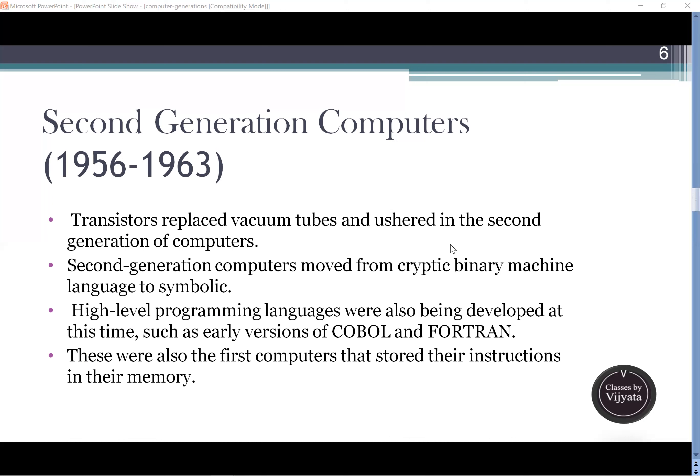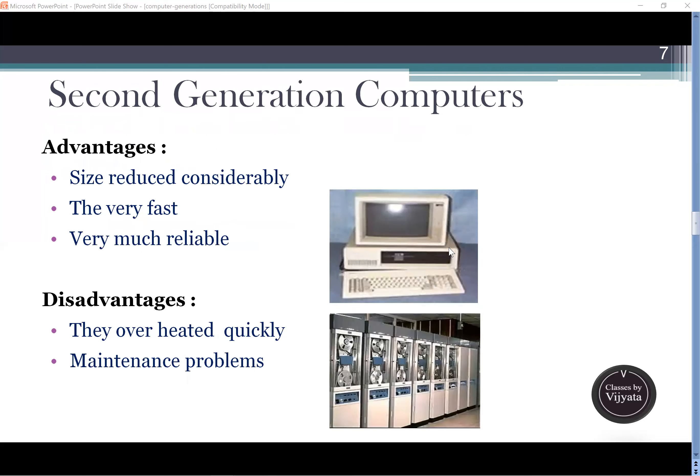The second generation computers were also the first computers that stored their instructions in their memory. Compared to the first generation, the second generation was relatively faster, required less space, and the heating problem was reduced because we replaced vacuum tubes with transistors. The size was reduced, it was relatively fast, and it was much more reliable than first generation computers — the major size problem of the first generation was addressed in the second generation.